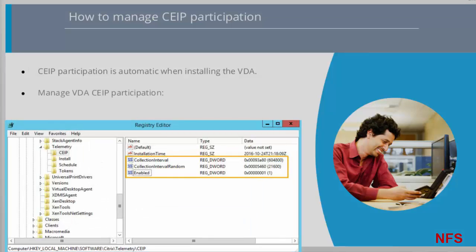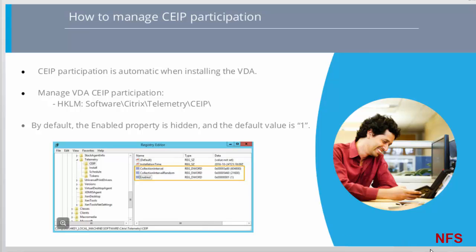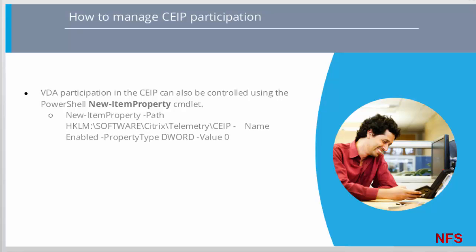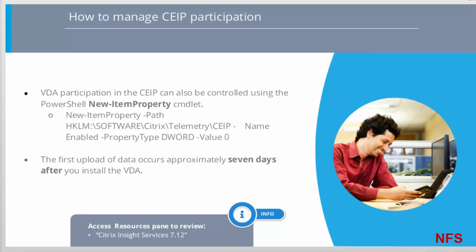Managing participation on VDAs can be done through the registry as shown in the screenshot. If you change the registry setting before installing the VDA, that value will be used. By default, the enable property is hidden in the registry; when it remains unspecified, the automatic upload feature is enabled. Using PowerShell, the New-ItemProperty commandlet can also control enrollment in CEIP. The first upload of data occurs approximately 7 days after you install the VDA.